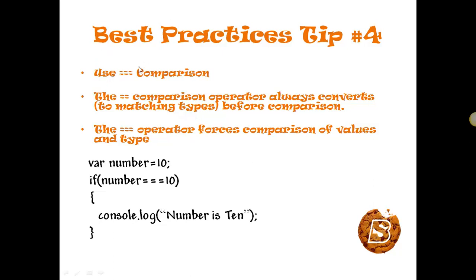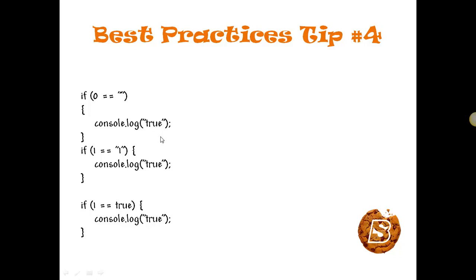Tip number four: we should always use triple equals (===) for comparison. The double equals (==) operator always converts to matching types before comparison, whereas the triple equals (===) operator forces comparison of both value and type. Here we are taking a number initialized with value 10 and comparing if the number is 10 using triple equals.